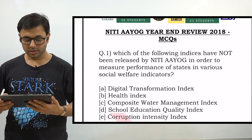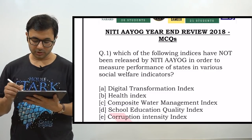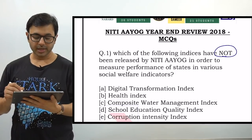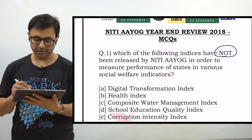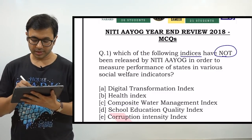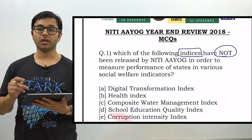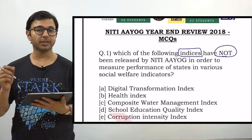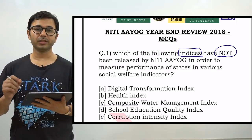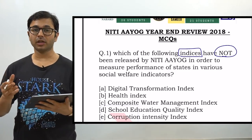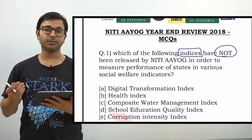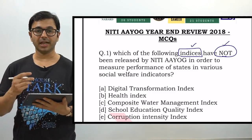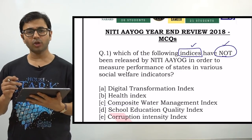Let's go through the first question. Which of the following indices have not been released by Niti Aayog in order to measure performance of states in various social welfare indicators? The keywords here are 'indices' and 'not been released by Niti Aayog.' As soon as you go through a question, the first objective is to identify the keywords before moving to the answer choices, because even if you have not read about a particular topic, you can eliminate some choices if you identify the keywords.